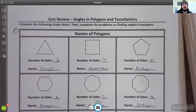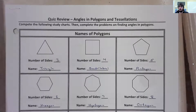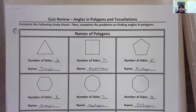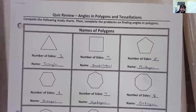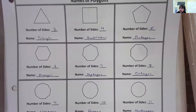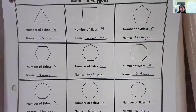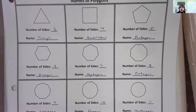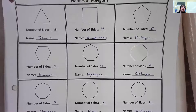Hello everyone, this is Mr. McMillan and I'm here with the quiz review answer key on angles, polygons, and tessellations. I've already filled out the front part, which will be uploaded along with the rest of the answer key. This first chart goes over the names of the polygons and how many sides each one has — it's meant to be a study tool so you can learn what each one's called and determine how many sides each polygon has.